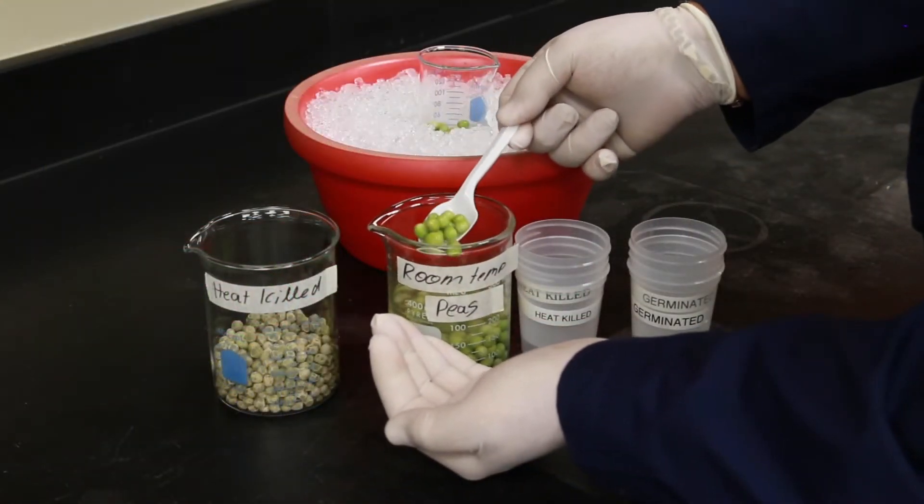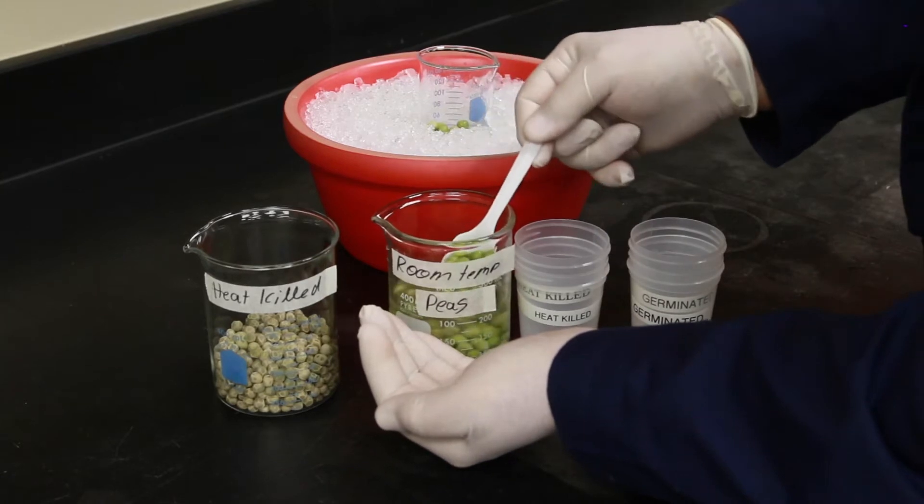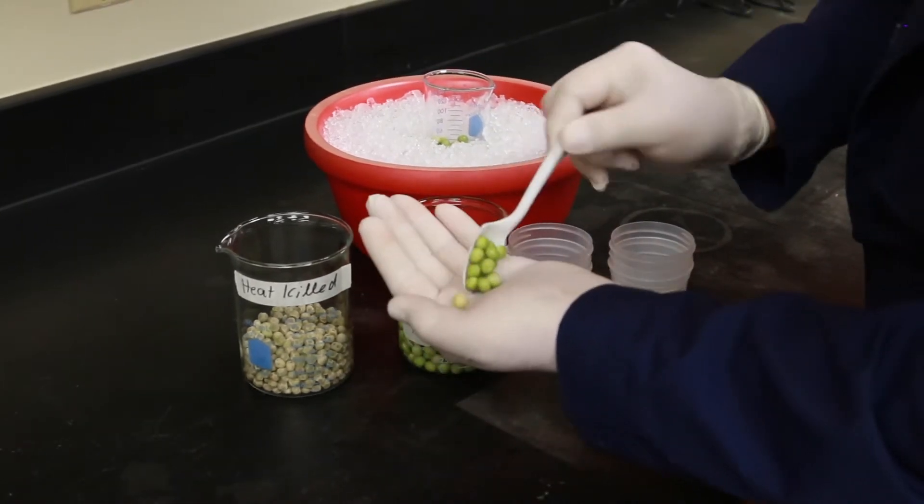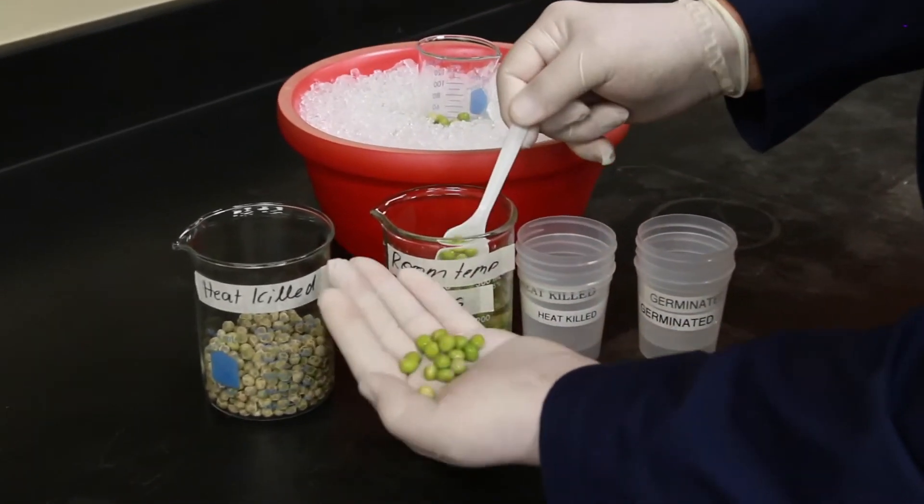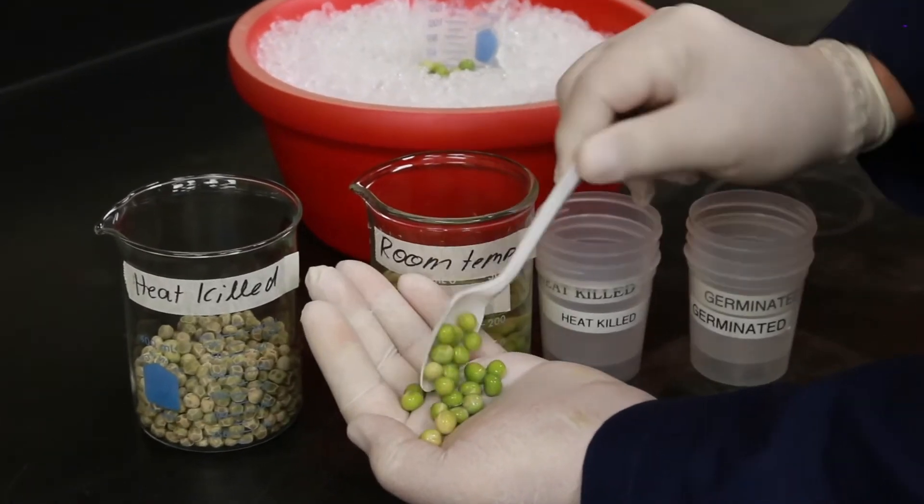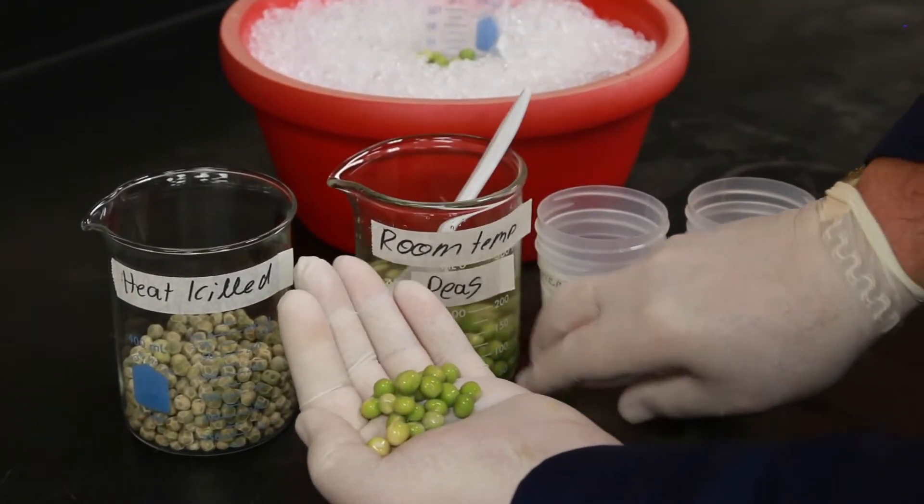To begin this experiment we first must count out 25 peas. Now these are peas that have been germinating at room temperature for about three or four days. They're simply soaked in water but they have begun the growth process.